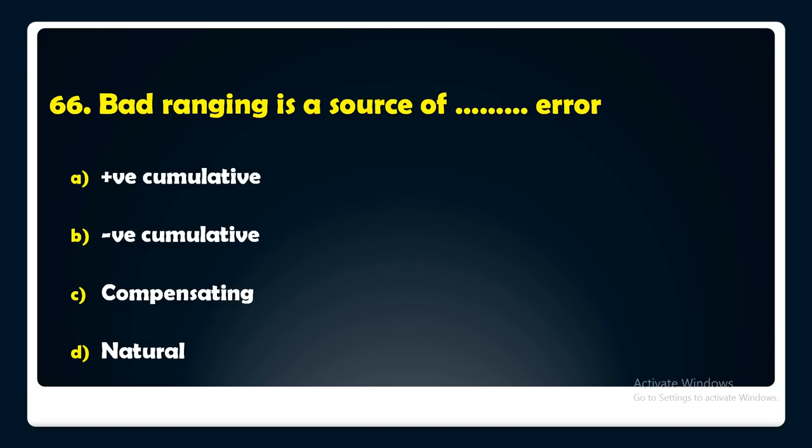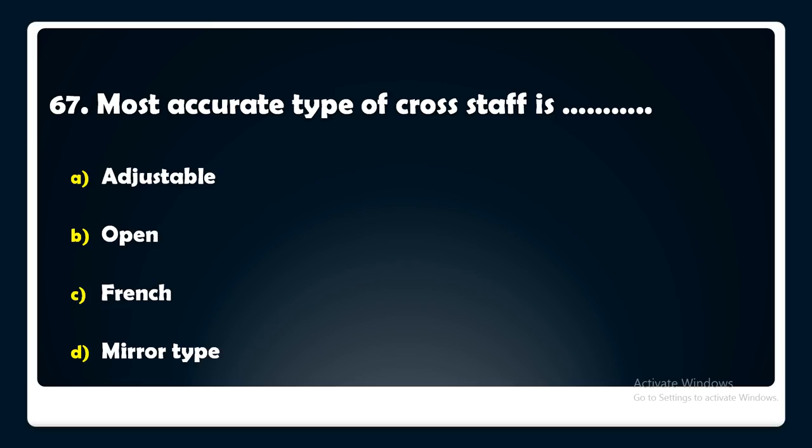The most accurate type of cross staff is — adjustable, open, fringe, or mirror type? The answer is: the most accurate type of cross staff is the open cross staff.